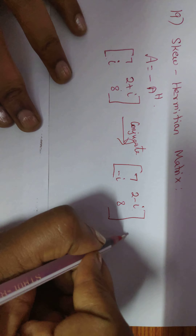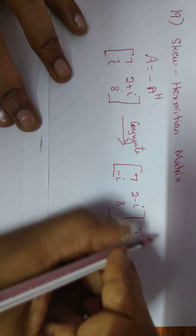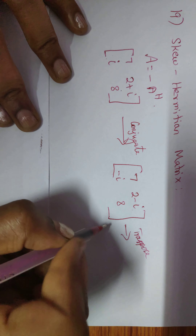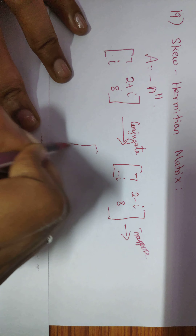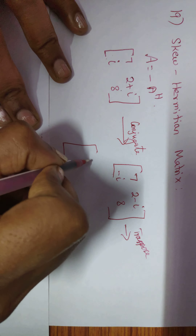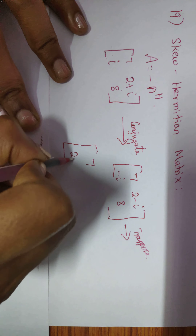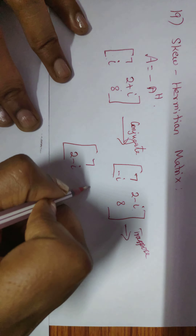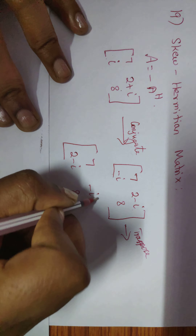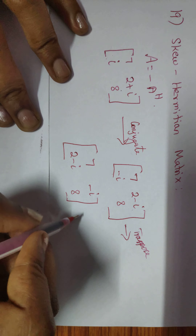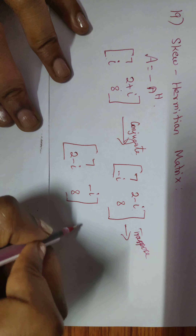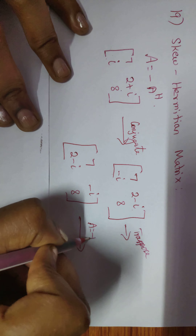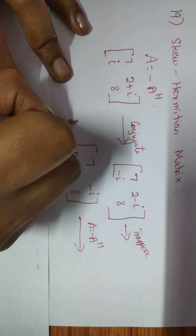Next, we perform the transpose operation, converting rows into columns. The first row [7, 2-i] becomes a column, and the second row [-i, 8] becomes a column. After the transpose operation, we have A^H. Now we apply A equals minus of A^H.